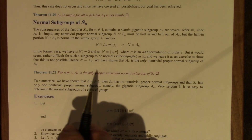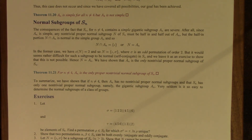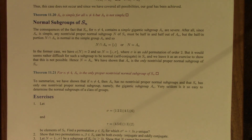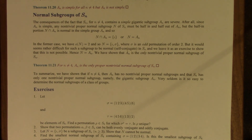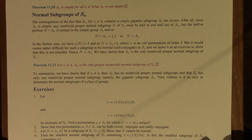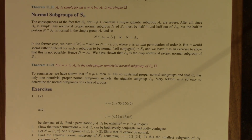But A_n is simple, so this intersection is either trivial or all of A_n — only two possibilities. In the former case, the 'half in' part has size 1, so N itself has order 2: it consists of the identity and an odd permutation of order 2. I'm going to leave you to consider that such a subgroup cannot in fact be normal in S_n. So that rules out this possibility, leaving only N equals A_n. That means A_n is the only non-trivial proper normal subgroup of the symmetric group S_n. To summarize: for n different from 4, A_n has no non-trivial proper normal subgroups, and S_n has exactly one non-trivial proper normal subgroup, namely A_n. Very seldom is it so easy to determine the normal subgroups of a class of groups — normality is a rather strict condition, and in the symmetric groups it only happens once: the gigantic subgroup A_n.